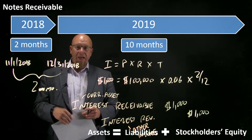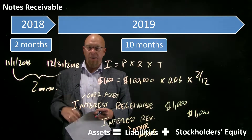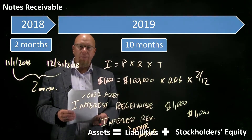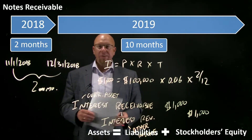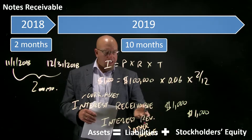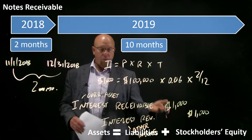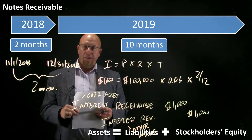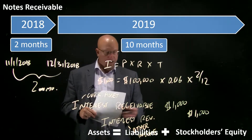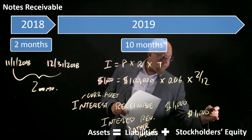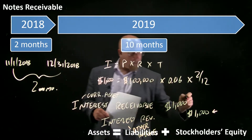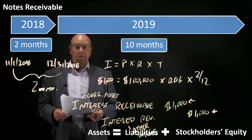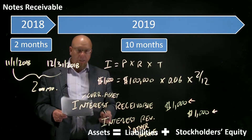We've earned two months' worth of revenue — $1,000 — and that belongs on our 2018 income statement. That's why we make a credit to interest revenue; revenues go up with a credit. However, we did not receive cash, so we can't debit cash. We have a promise to pay cash, and accrual accounting allows us to record the transaction on both the income statement and balance sheet without affecting the cash account.